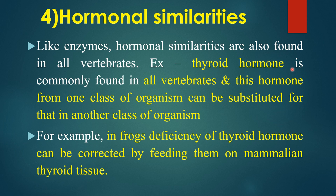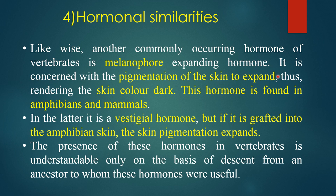Next is hormonal similarities. Like enzymes, hormonal similarities are also found in all vertebrates. For example, thyroid hormone is commonly found in all vertebrates, and this hormone from one class of organism can be substituted into another class. In frogs, a deficiency of thyroid hormone can be corrected by feeding them on mammalian thyroid tissue. Another commonly occurring hormone in vertebrates is the melanophore-expanding hormone, concerned with pigmentation of skin. This hormone is found in amphibians and mammals; in the latter it is a vestigial hormone, but if it is grafted into amphibian skin, the skin pigmentation expands.